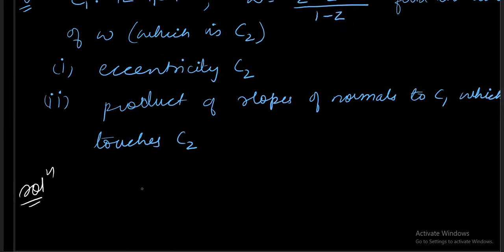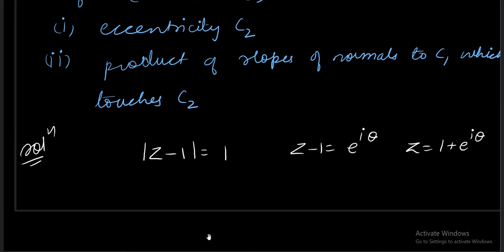First of all, the information provided is this. I can take z minus 1 as e power iota theta. I will write z as 1 plus e power iota theta.